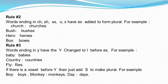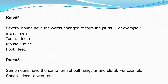Rule 4: Several nouns have the vowel changed to form the plural. For example, man — men, tooth — teeth, mouse — mice, foot — feet. Rule 5: Some nouns have the same form for both singular and plural. For example, sheep, deer, dozen, etc.